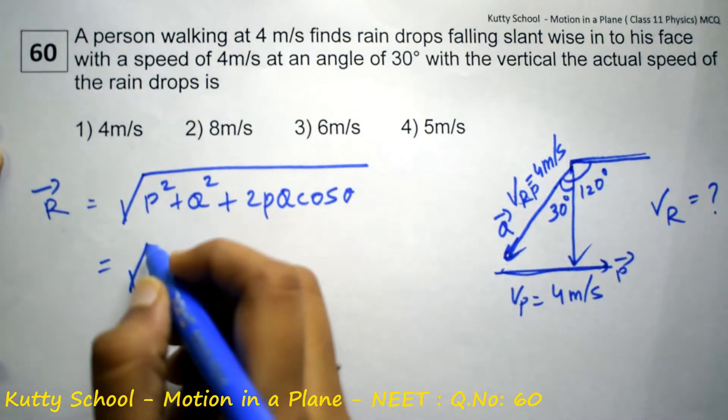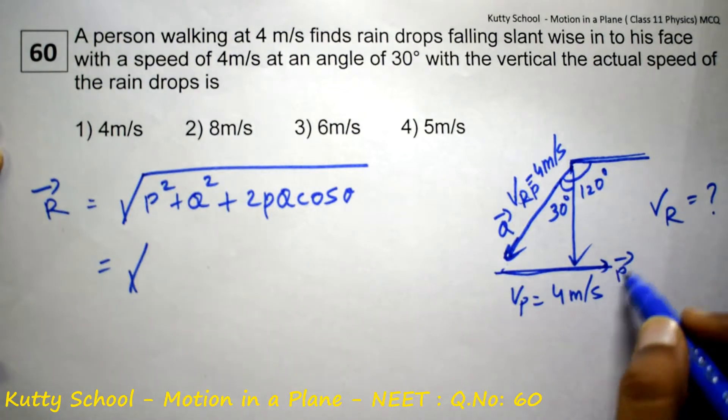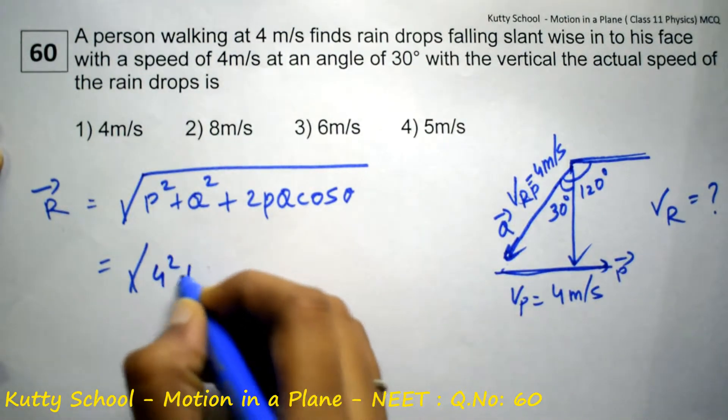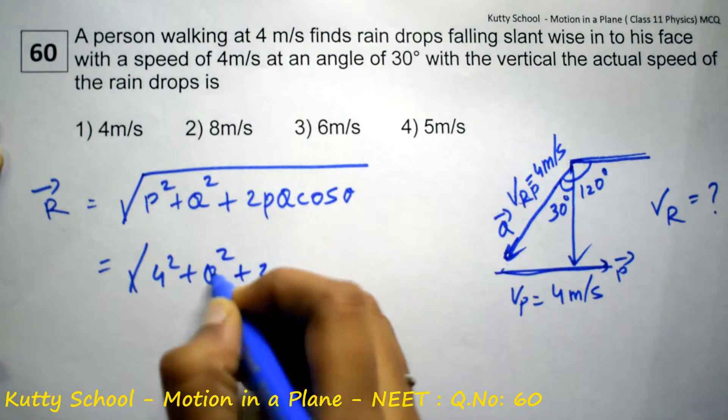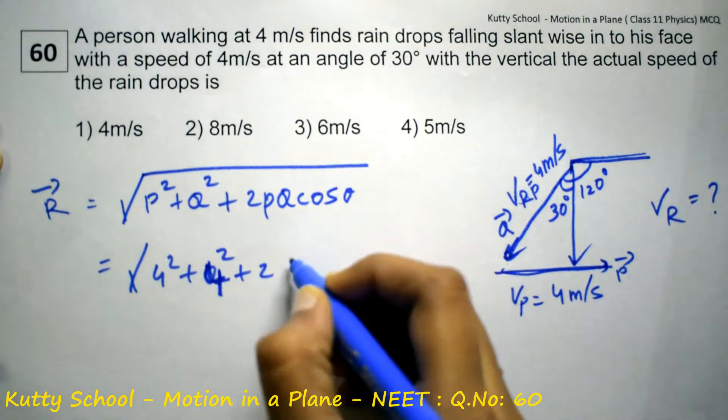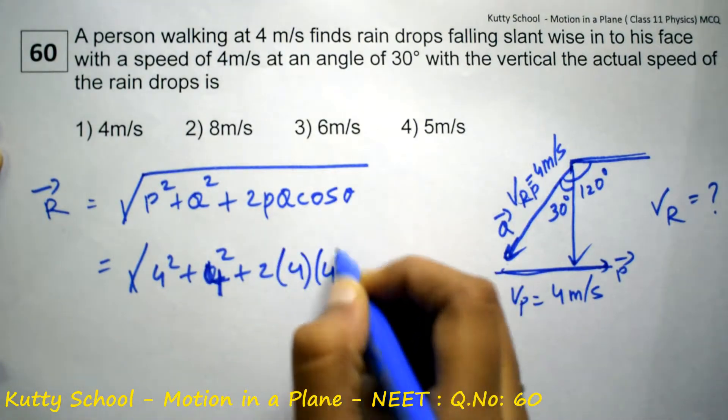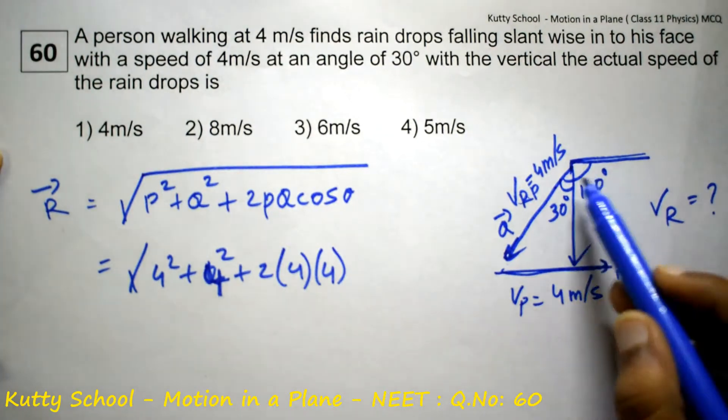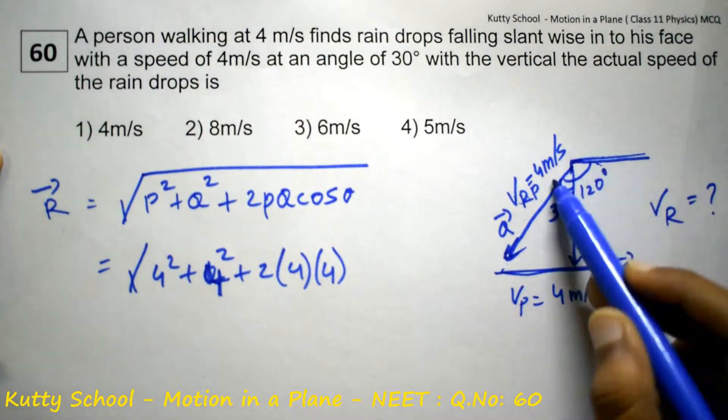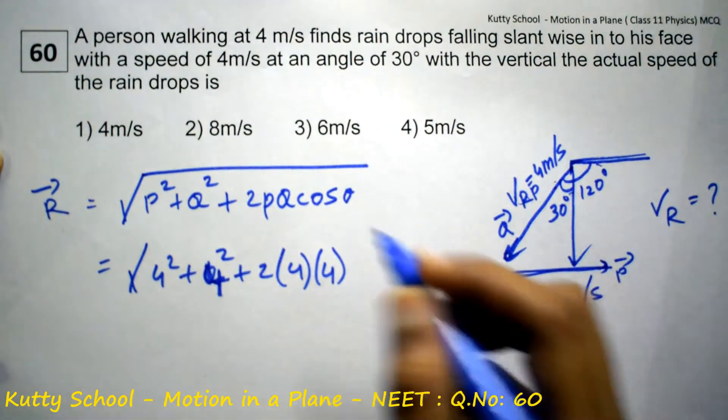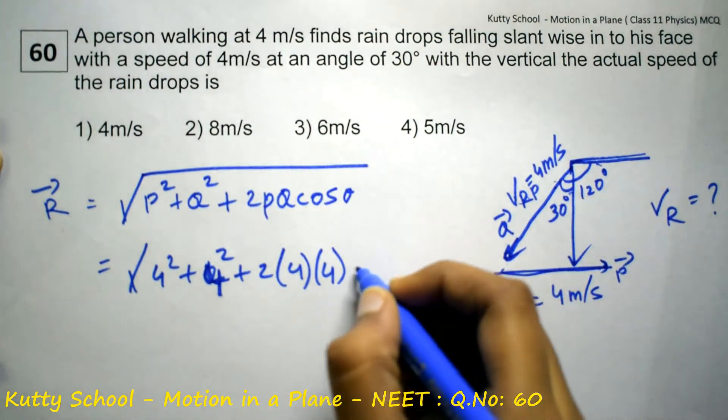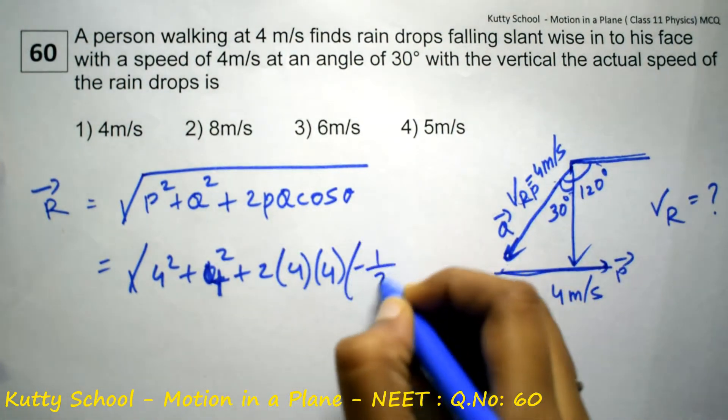Which is equal to root of 4 square plus 4 square plus 2 into 4 into 4 cos 120 degrees. Cos 120 degrees is minus 1 by 2.